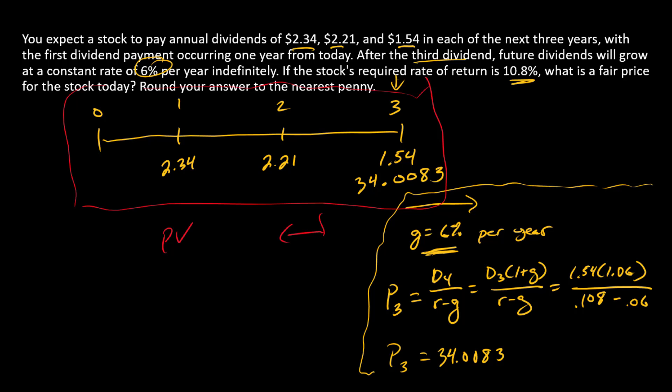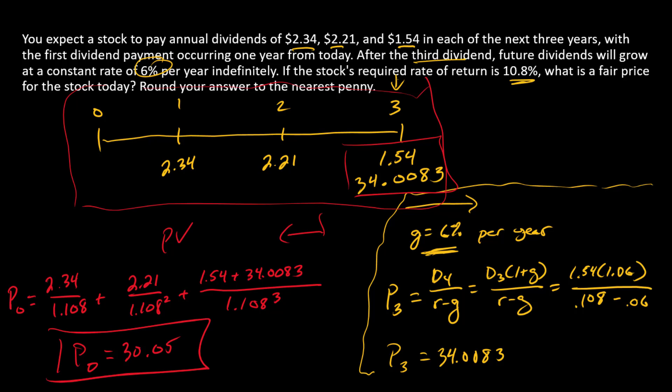Now this is just a present value of multiple cash flow problem. The price, our estimate for the price, should be the first dividend discounted one period, plus the second dividend discounted two periods, plus the sum of the third dividend and P3, all discounted three periods. That gets us P0 of $30.05, so there is our answer.